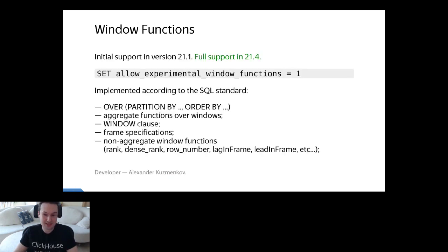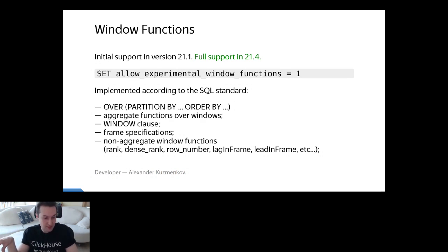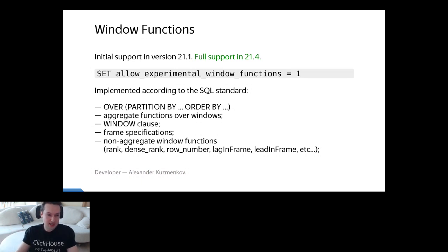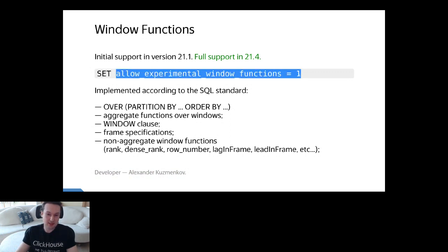This dream comes true with full correspondence to the SQL standard. We support basically everything — OVER, PARTITION BY, ORDER BY statements. We support calculating every aggregate function over windows. We have window clause and frame specifications. We support specific window functions like rank, dense rank, and row number. We still have an experimental flag, but it is going to be removed because this feature is proven to be working perfectly.